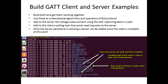In the server, voltage measurement is done by adding a task and using the analog-to-digital converter. In the client, polling is done also in a task, but this task will run continuously. Once the server peripheral is working, a sensor such as the gas sensor in this example can be added since the code is complete at this point.